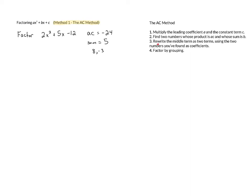Then we rewrite the middle term as two terms using the two numbers you found as coefficients. So we're going to take this 5x and we're going to split it up. We're going to keep the 2x squared out front, and then we're going to rewrite 5x as a sum of two terms with these numbers as coefficients. So we're going to write it as 8x and then minus 3x or plus negative 3x, and then we still have that minus 12 in the end.